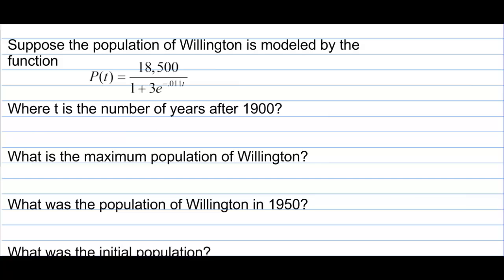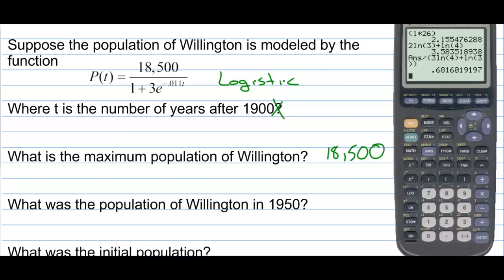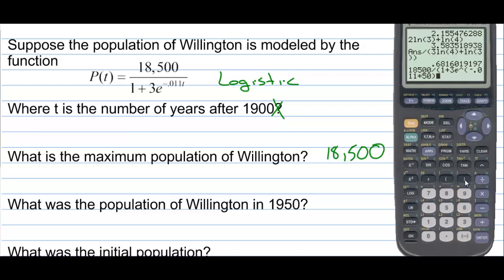Suppose the population of Willington is modeled by a logistic function, where T is the number of years after 1900. What is the maximum population? It's 18,500 — if you're given a logistic equation, the maximum population is right there in the numerator. What is the population in 1950? We plug T = 50 into the equation: 18,500 / (1 + 3e^(−0.11 × 50)) ≈ 6,774.